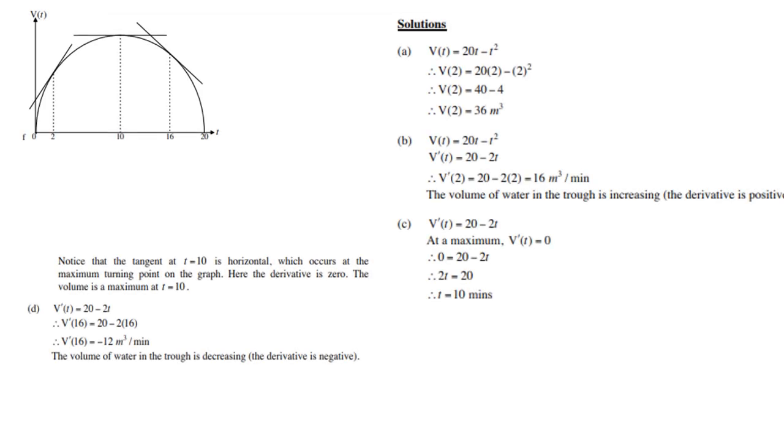So, A. Volume, the V(t) is then given as 20t minus t squared. So, volume at time 2 is a straightforward substitution. Replace t by 2, and then you get your answer. Volume at time 2 will be 36 cubic meters.